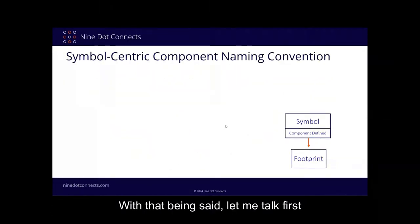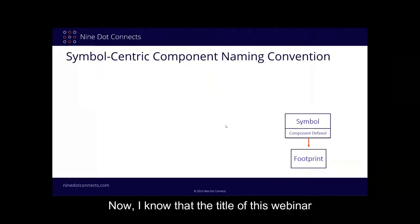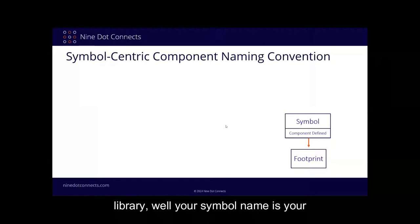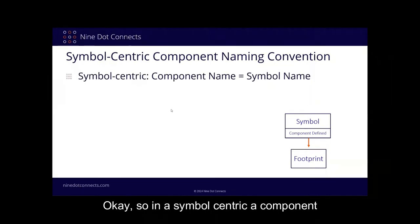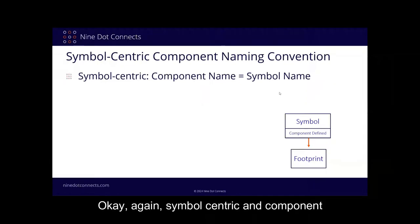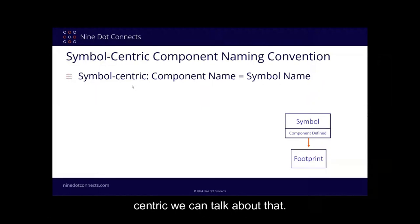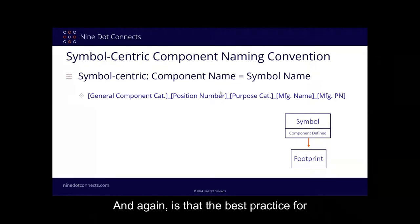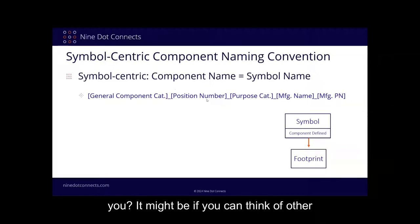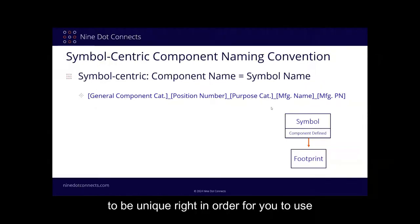Let me talk first about symbol centric component naming conventions. If you're using a symbol centric library, your symbol name is your component name. In a symbol centric library you have to have a unique name — that's why I need to bring this up first. So in symbol centric, a component name is the symbol name, which means it has to be unique. Here's the format we're recommending: general component category, a position number, a purpose category, and then a manufacturer's name and manufacturer's part number.